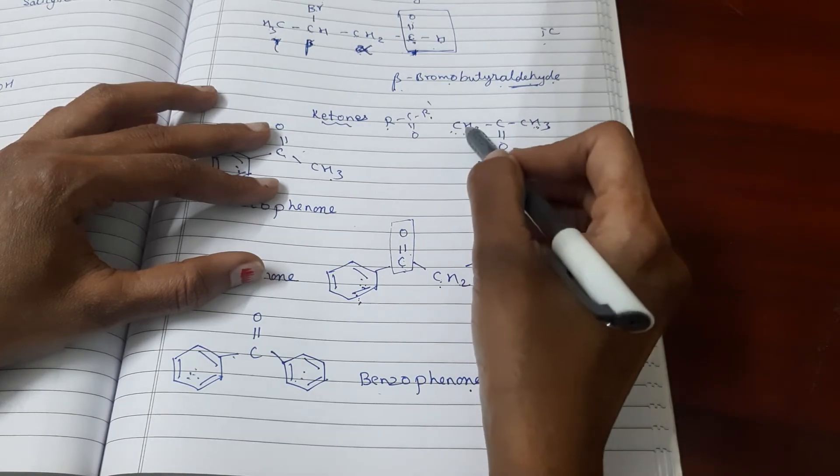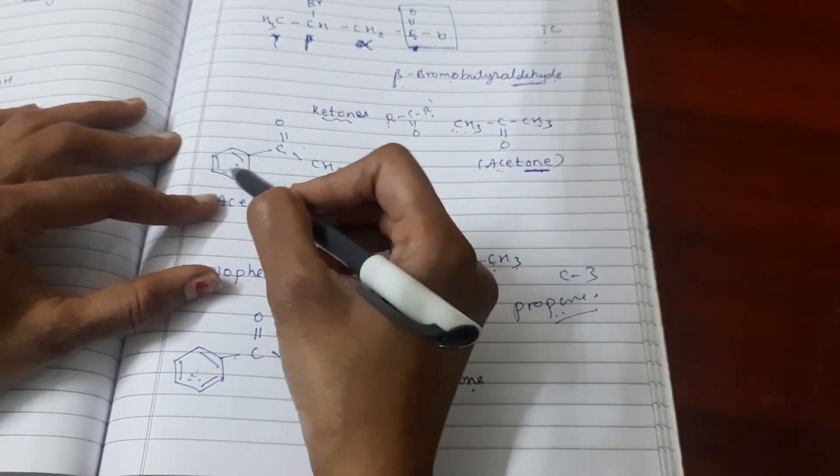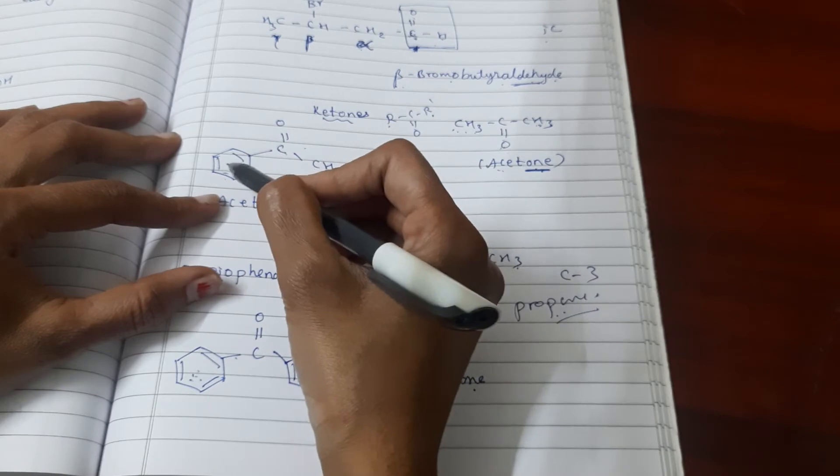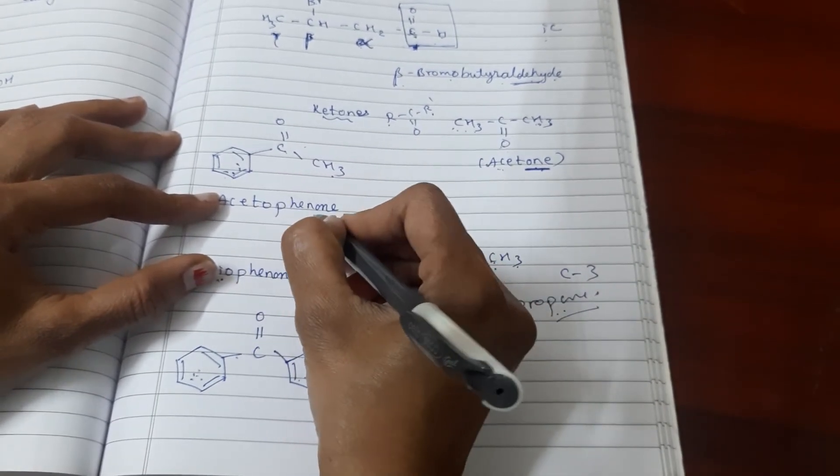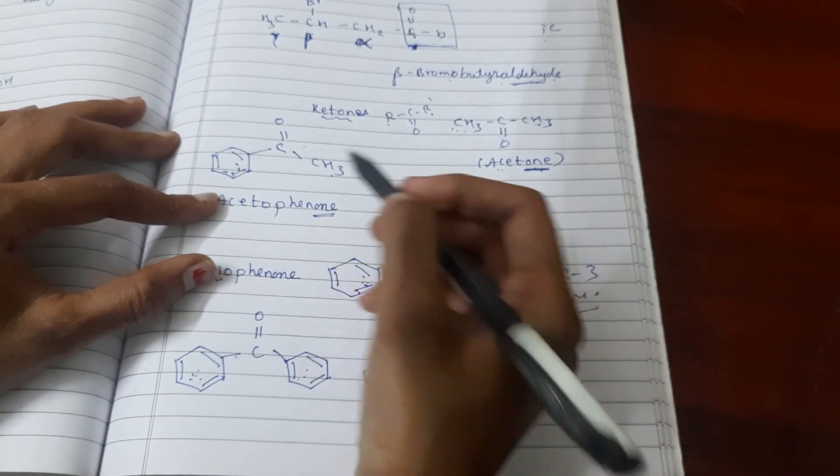Now, we have benzene. When we attach an acetyl group to benzene, we can say acetophenone. This is a ketone, using the -one suffix. So this is acetophenone.